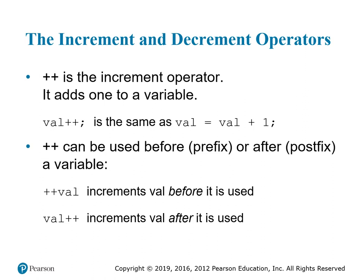Gaddis starts out by introducing two operators that get used an awful lot in looping: the increment and decrement operators. In C and all of the C-derived languages — C++, C#, Java, JavaScript — the plus-plus is an integral part of the language. Instead of typing val equals val plus one, you can just put val++ and that operator adds one to whatever number is stored in the memory location val.